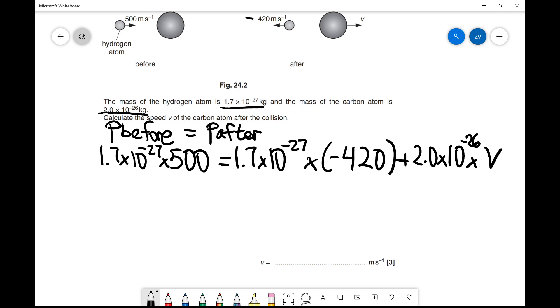It's 1.7 × 10^-27 × 500. The minus on the right turns to a plus as I bring it over to the other side.